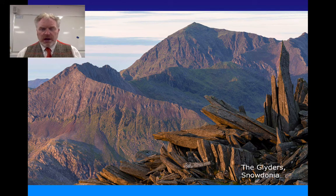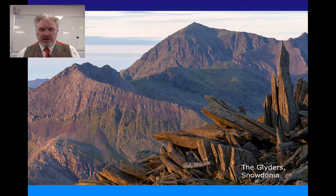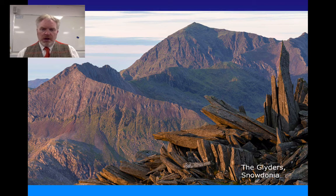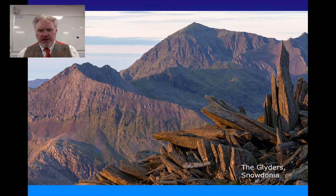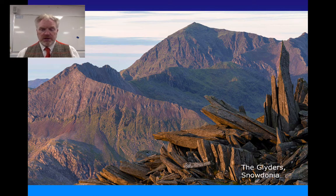In areas that stick out between ice sheets — high up in the mountains — we get the formation of features called nunataks: extreme frost-shattered boulders that form in this intense freeze-thaw environment around the ice sheets. This example from the Glyders in Snowdonia is a spectacular boulder field created by freeze-thaw weathering. If we compare that with rocks lower down the mountain, we don't see the same degree of frost shattering, because those rocks will have been polished by the ice — they cannot have been nunataks.